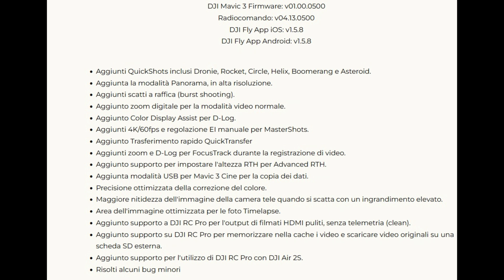Altra aggiunta molto importante e molto richiesta dagli utenti è la possibilità di cambiare il sistema del ritorno a casa automatico. Fino ad oggi il drone decideva autonomamente l'altezza del ritorno a casa a seconda degli ostacoli che incontrava, e comunque non funzionava come i precedenti droni. Con questo aggiornamento DJI ha aggiunto la possibilità di abilitare il ritorno a casa tradizionale, impostando l'altezza: quando scatta il ritorno automatico, il drone si porta all'altezza impostata dall'utente e poi torna a casa. Per la versione Cine del Mavic 3 è stata aggiunta la modalità USB per la copia dei dati, ed è stata ottimizzata la correzione del colore così come l'area dell'immagine per i timelapse.